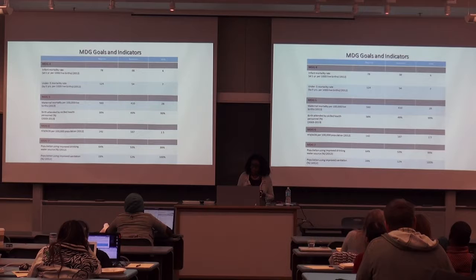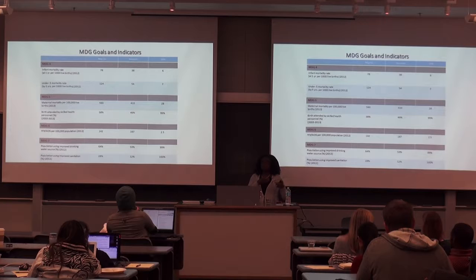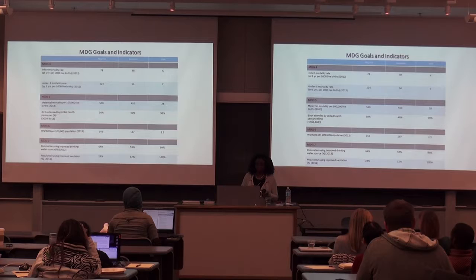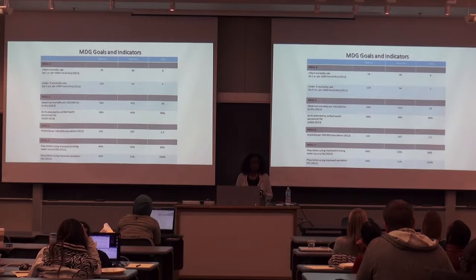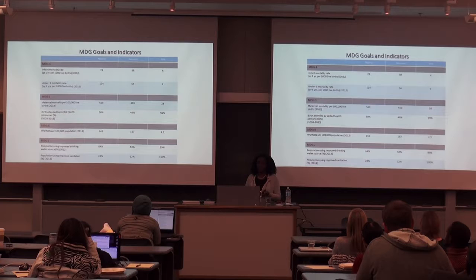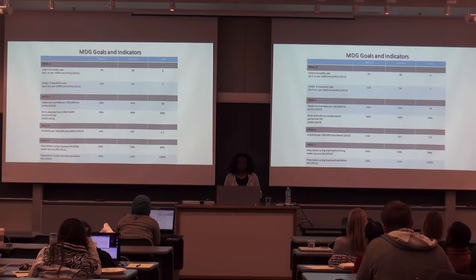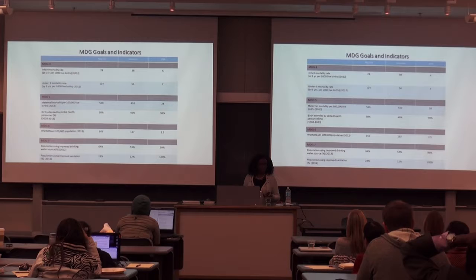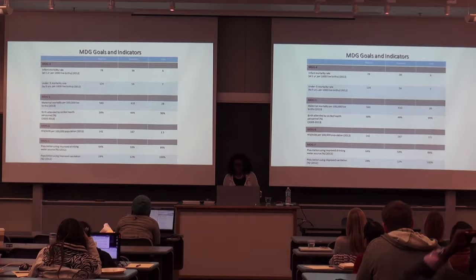The next indicator is births attended by skilled health personnel — who takes care of mothers during pregnancy and at delivery? For Nigeria, only 38% of women have trained personnel present during childbirth. That's very, very low, and it explains the high maternal mortality. Without health support and when complications arise, most women either bleed to death after childbirth, because they simply don't have healthcare to help them.